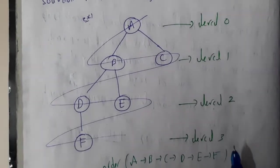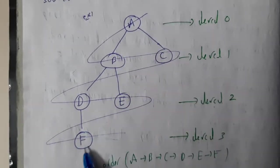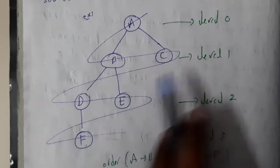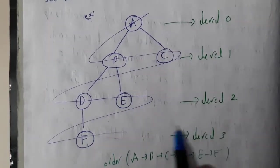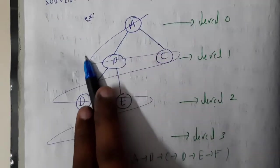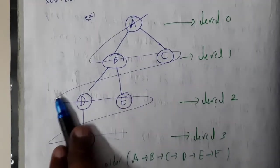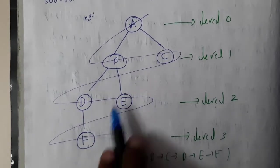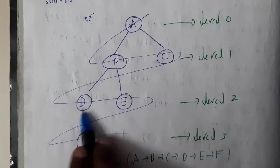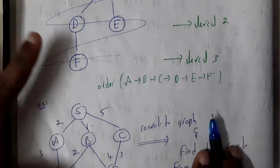Now let us go through the approach of how BFS works. If this is your graph and F is your goal node, we have level 0, level 1, level 2, and level 3. Initially level 1 is scanned, then it goes to level 2, then level 3, and level 4. The traversal order is A to B, B to C, C to D, D to E, E to F.